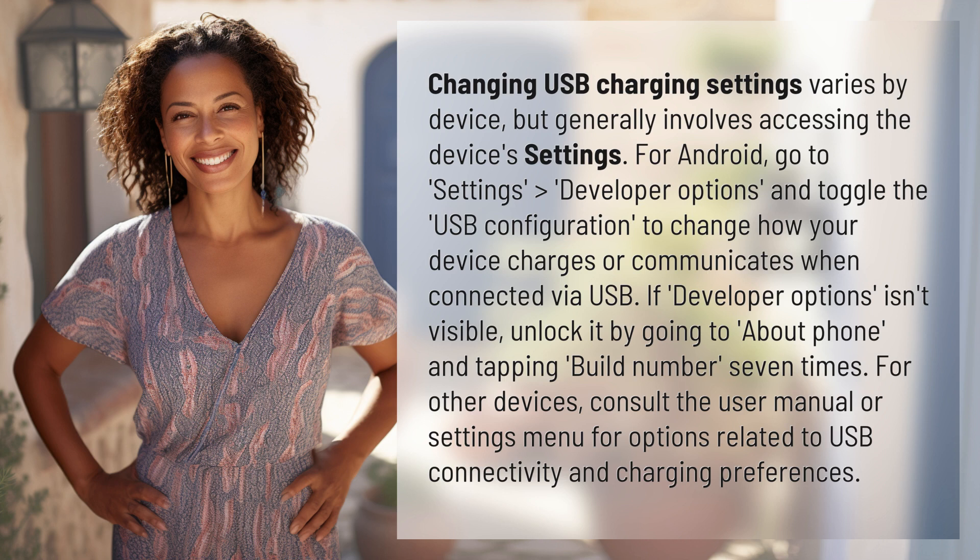If Developer Options isn't visible, unlock it by going to About Phone and tapping Build Number seven times.